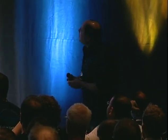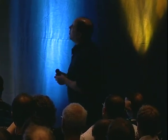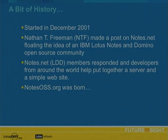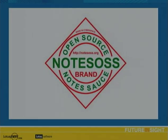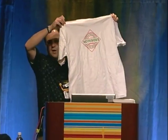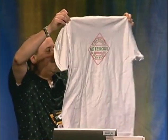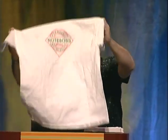A bit of history. OpenNTF was started in December of 2001. It was born on the NotesNet forums when Nathan T. Freeman made a post soliciting the idea for an open source community for Notes and Domino. A whole bunch of developers from around the world said, 'Nathan, great idea.' They offered up some resources and NotesOSS.org was born. The original name was NotesOSS.org. There's even a T-shirt from around Lotusphere 2003 — Julian is actually wearing one.